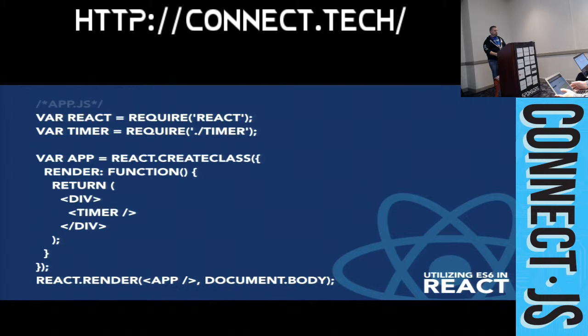Since we now have a class, we need a constructor method. This is where initial state goes in ES6. We change to a constructor method and use this.state — so when the new React component is called, the constructor runs and state is set there. If you're passing properties to the component, you pass those into the constructor and then call super on them.